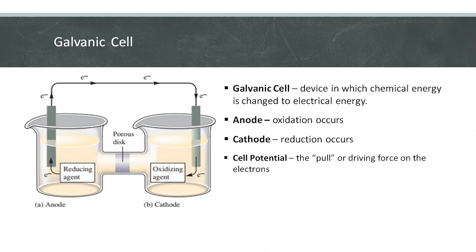In a galvanic cell, an oxidizing agent in one compartment pulls electrons through a wire from a reducing agent in the other compartment. This pull or driving force for the electrons to flow is what we call cell potential.